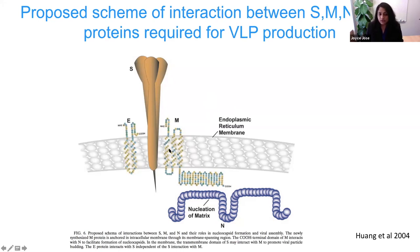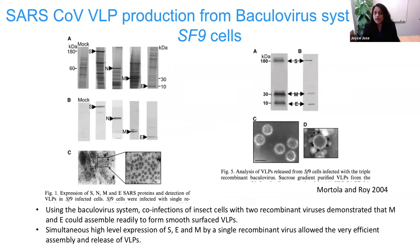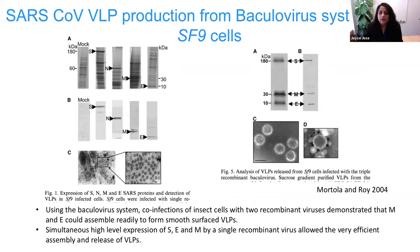Another approach uses an alphavirus replicon system. Chikungunya virus is an alphavirus. By replacing the alphavirus structural protein genes with SARS-CoV-2 structural proteins under a promoter, we can use the alphavirus replication machinery to express the SARS-CoV-2 structural proteins. This has been demonstrated for Norwalk virus VLPs using the alphavirus replicon system. My interest is also in virus assembly — studying what protein interactions are required for particle formation and genome packaging.